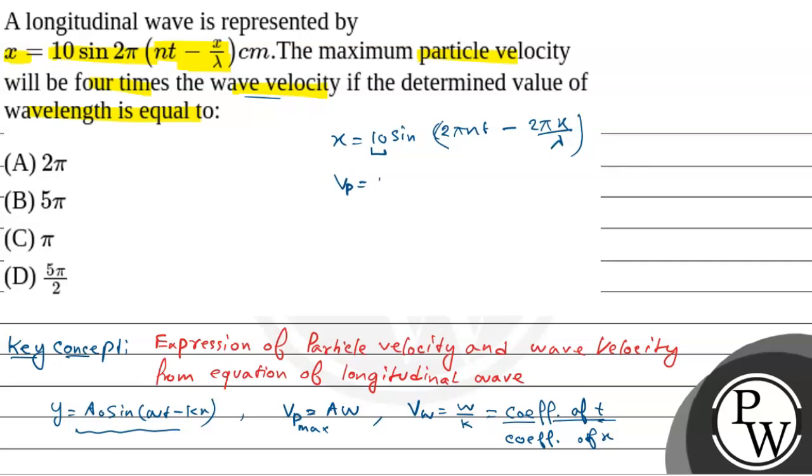So vp, that is velocity of the particle, will be 10 omega. So omega is 2π n. So this equals 20π n.